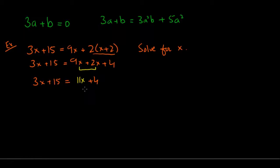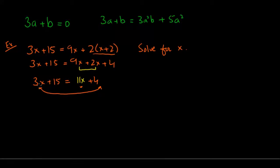To solve for x, I want all x terms on one side and constants on the other. I'll move 3x to the right side — since it's positive, it becomes negative 3x. Similarly, I move the constant 4 to the left side — positive 4 becomes negative 4. So I have 15 minus 4 equals 11x minus 3x.